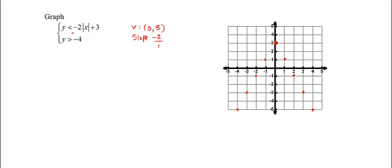This inequality is a less than not equal to, so my absolute value is going to be dotted. And then since it's less than, it's shaded everything below. So I'm shading everything that's below this absolute value.